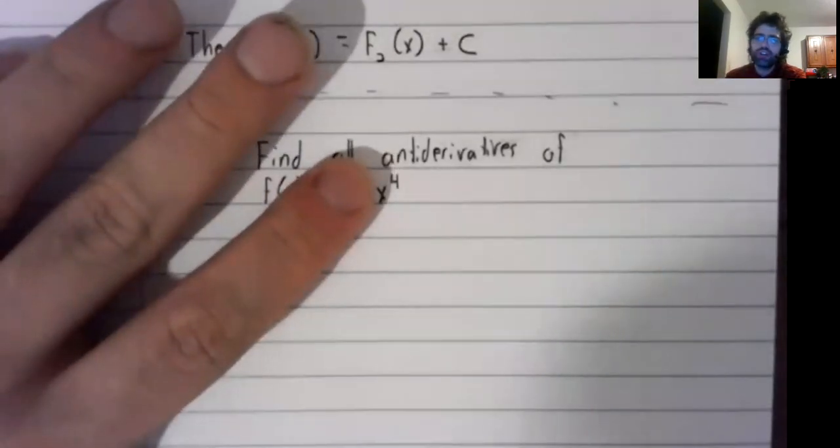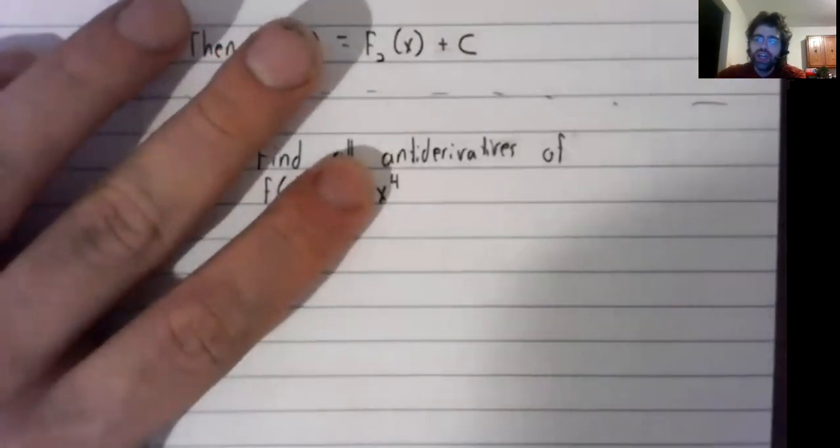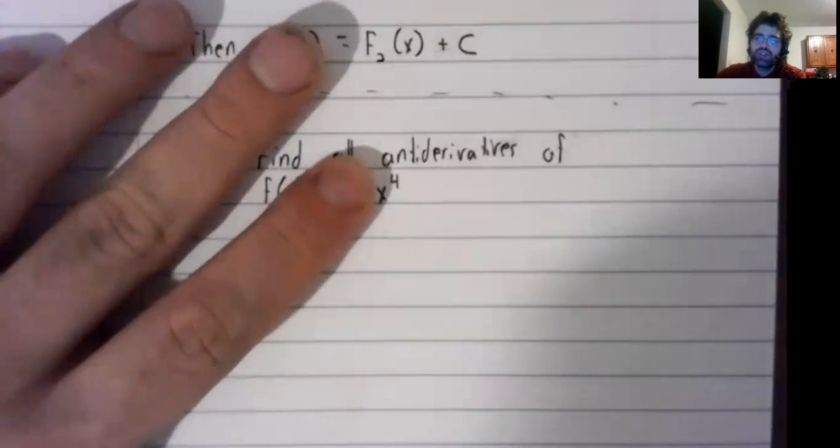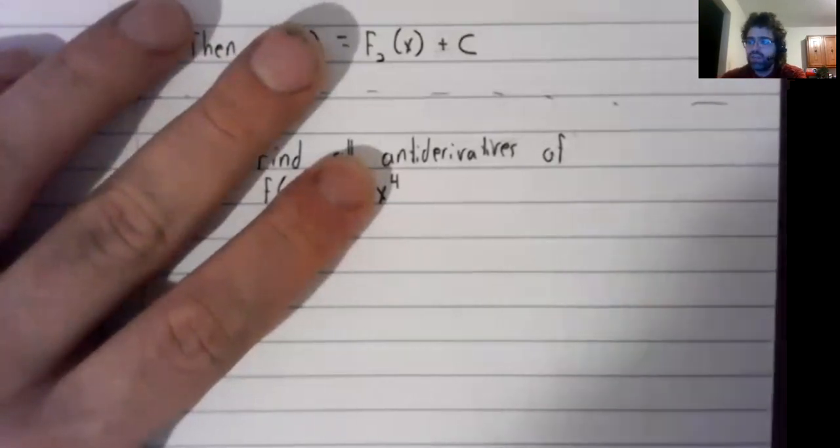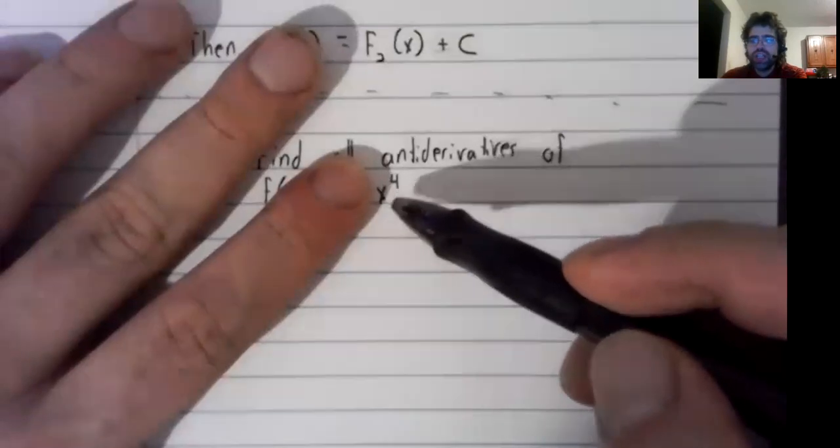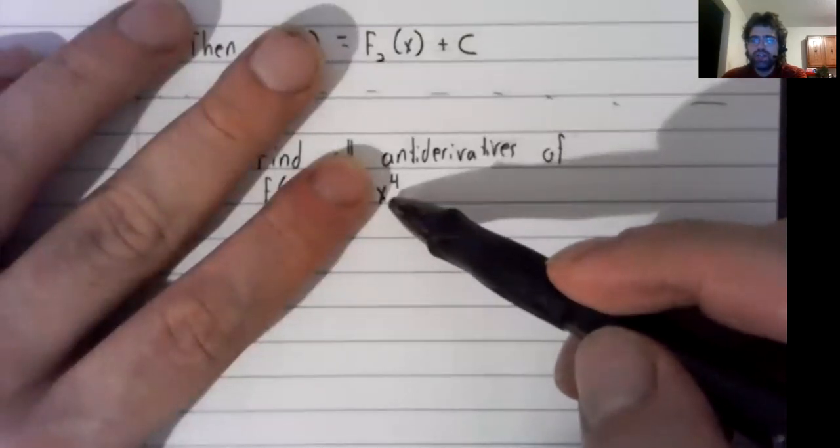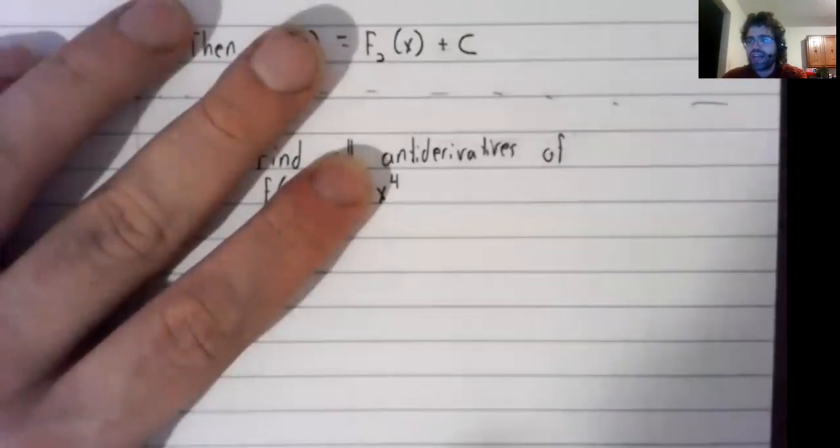Ignore the three for a moment. Constant multiples are easy to work with. How could you take a derivative and get something involving x to the fourth?